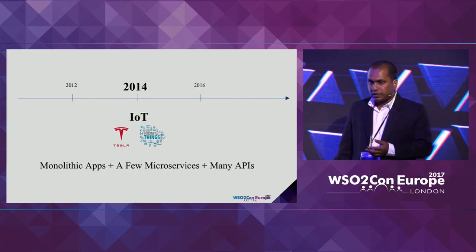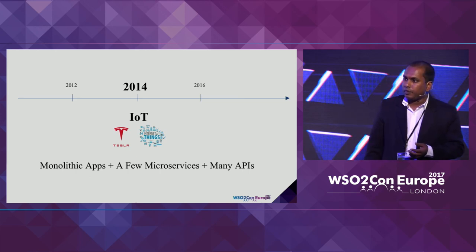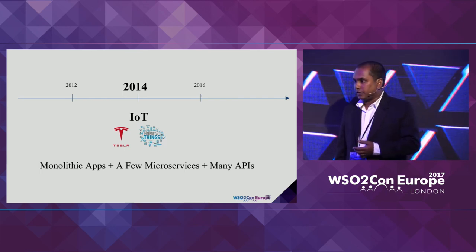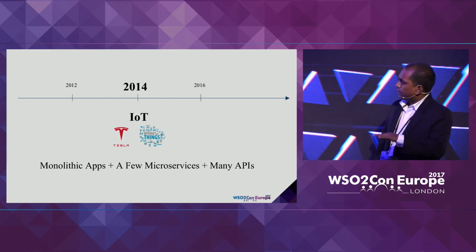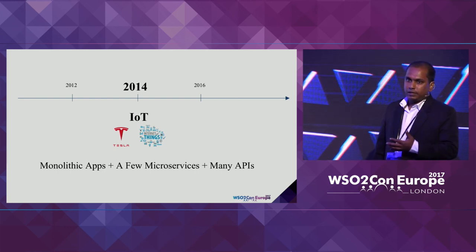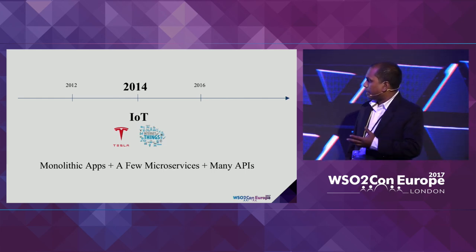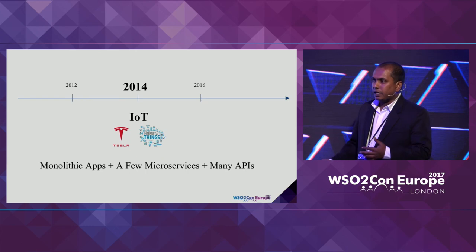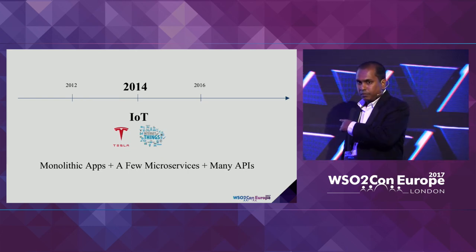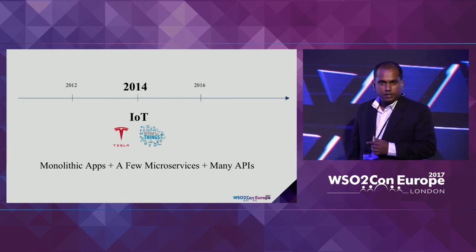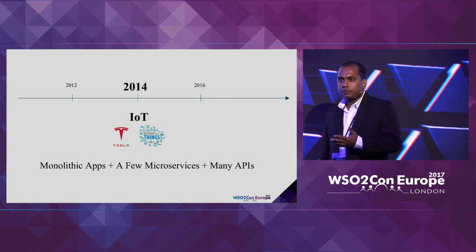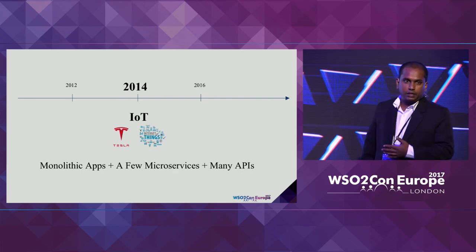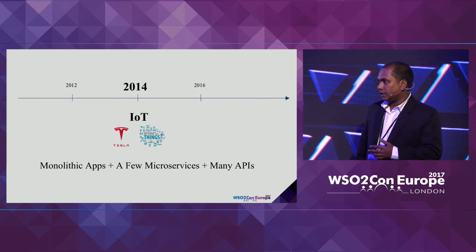Going further, in 2014 electric cars were introduced, and people started thinking about how to use IoT in production. In the application domain we can see multi-service applications, and microservices started booming in this era with a lot of APIs being used in software development. The reason for the microservice boom: in 2013, Docker became open source, so people could use containers to actually deploy microservices in production.